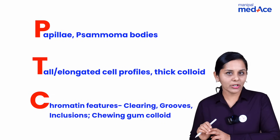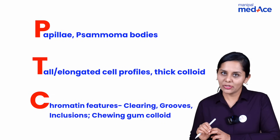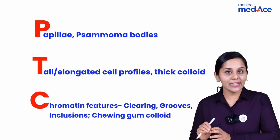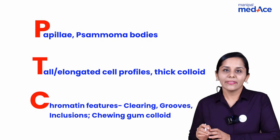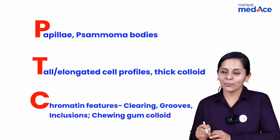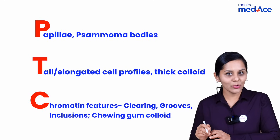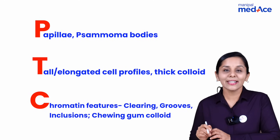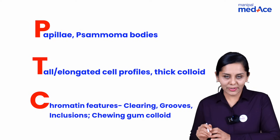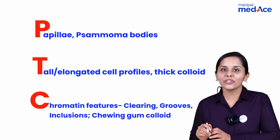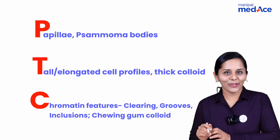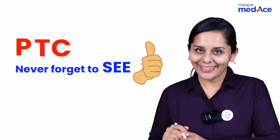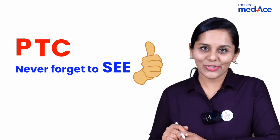C stands for all the chromatin features. The three important nuclear features are: clearing like Orphan Annie eyes, then nuclear grooves or internuclear cytoplasmic inclusions. Along with that, in cytology we see chewing gum colloid. Thank you for your attention.